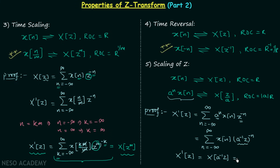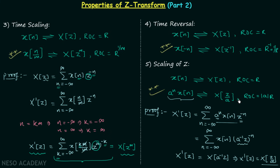We can write A^(-1)·Z as Z/A. Comparing with the stated property, we have proved that the Z transform of a^n·X(n) is equal to X(Z/A). So remember this scaling of Z property of Z transform.